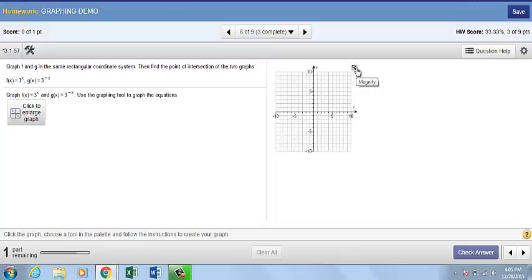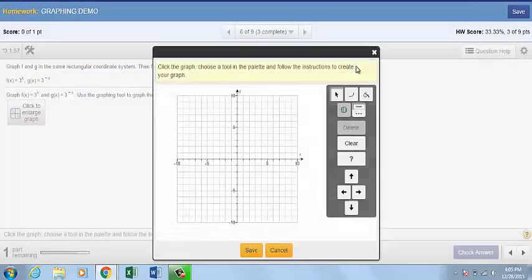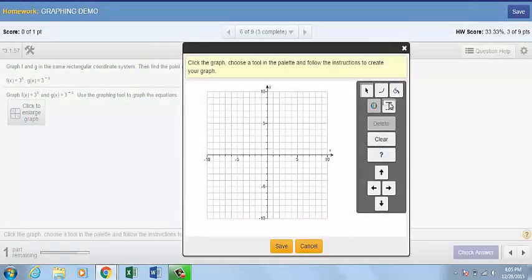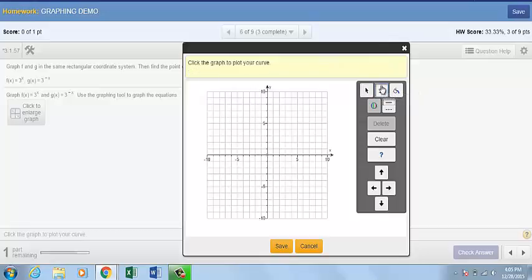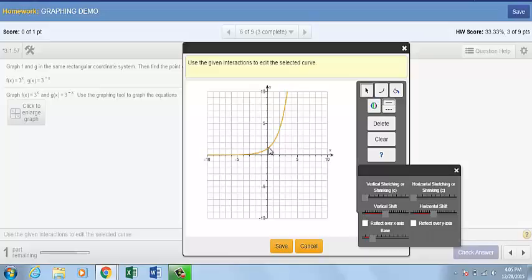Your next graph is an exponential function. When you click on this, you will notice you now have the exponential tool. Choose the tool and begin by plotting the y-intercept. When x is 0, y is 1. You will automatically be given an exponential graph.